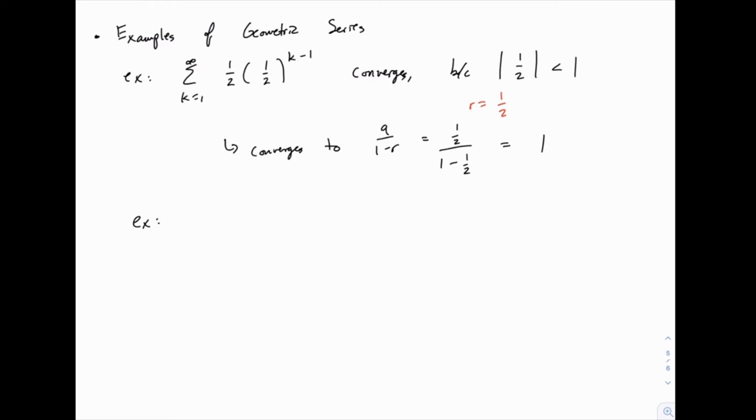Here's another example. We have something like 3 fifths times 5 thirds to the k minus 1. All that matters as far as convergence goes is what the value of r is, and since the value of r here is 5 thirds, this one diverges because the absolute value of 5 thirds is greater than 1.